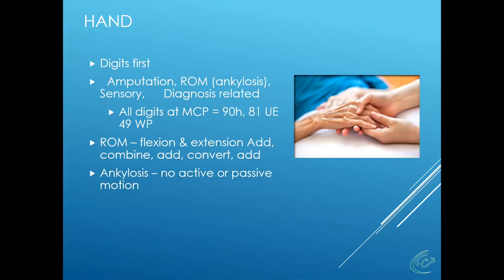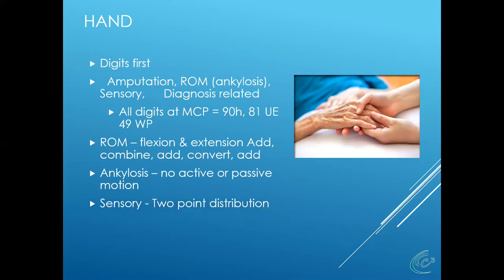Ankylosis means no motion whatsoever. If this lady had a crush injury to the PIP joint, the fracture healed, she didn't do her physical therapy, and the digit just sticks out straight — that's ankylosis, and it results in a much more elevated impairment rating because the functionality of the digit is markedly reduced. Sensory loss is based on two-point discrimination. If the distance is 6mm or less, there is no functional impairment. Between 7mm and 15mm is a partial impairment, and greater than 15mm is complete sensory loss.